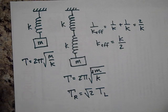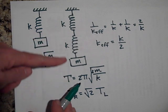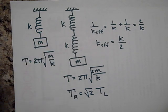Square root of two is about 1.4 times. So it's going to take longer to go up and down, about 1.4 times longer to go up and down one time.